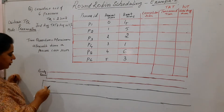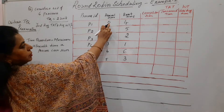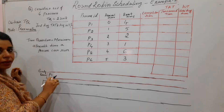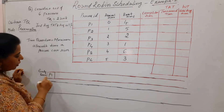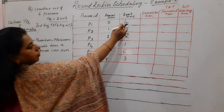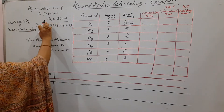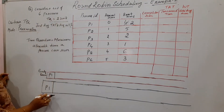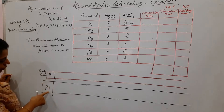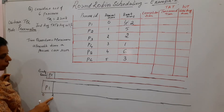Start writing values in the Gantt chart from time unit zero. At time zero, P1 arrives (arrival time = 0), so P1 goes into the ready queue first, then into the running queue. P1's burst time is four units, but it will execute for only two units since the time quantum is two. P1 stops at time unit two, with a remaining burst time of two.